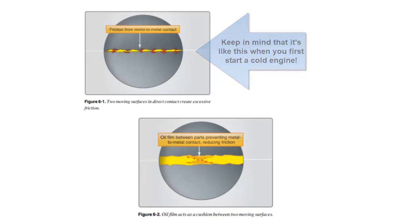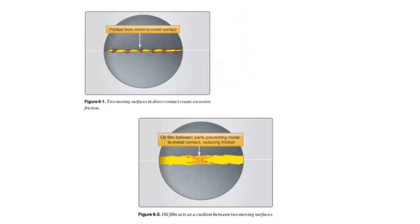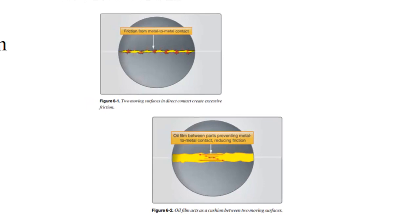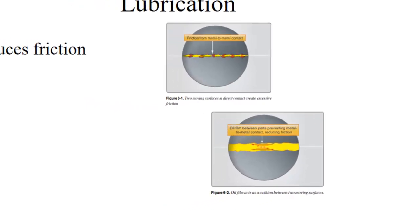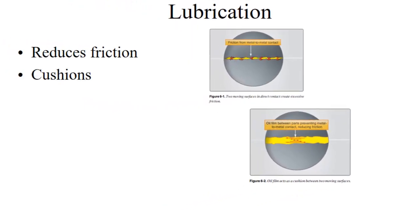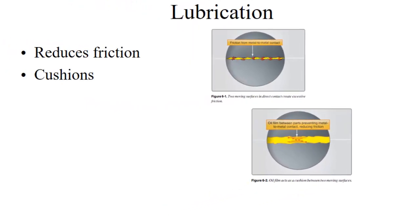But oil has other functions as well. Its main function is to reduce friction and cushion parts as they vibrate. It dampens out the vibration, keeps them from slapping against one another, and it absorbs some of the heat.